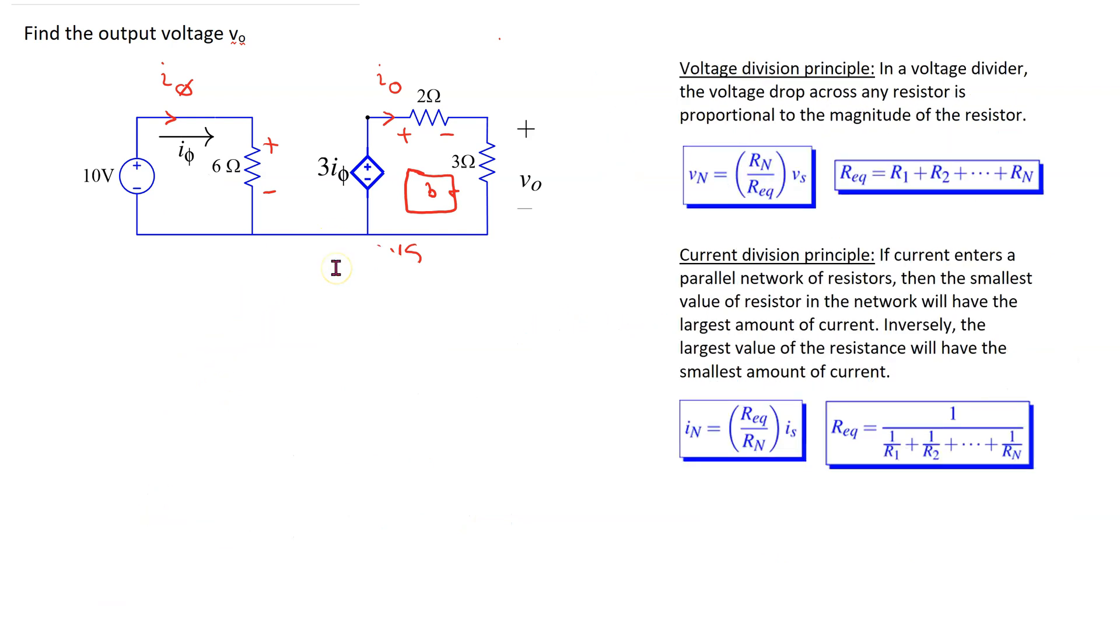This circuit can also be efficiently solved using voltage and/or current division principles. These principles are illustrated here. In a voltage divider, the voltage drop across any series resistor is proportional to the magnitude of the resistor, and in current division, the constant of proportionality is opposite to that of voltage division.